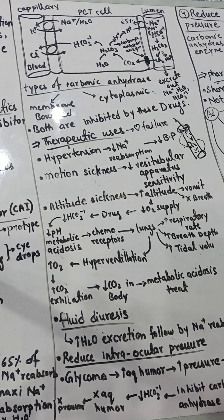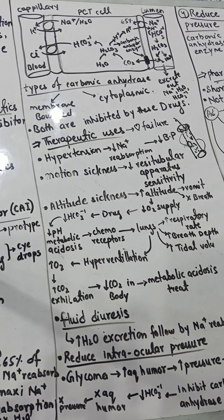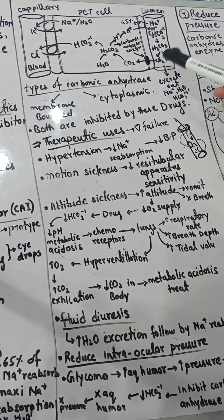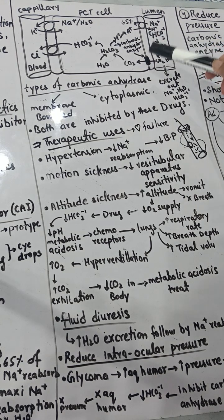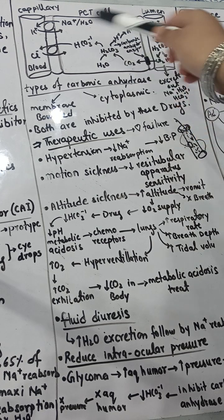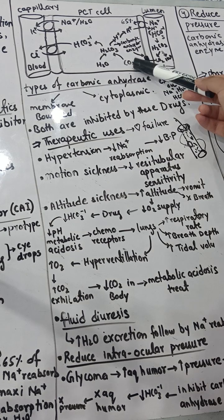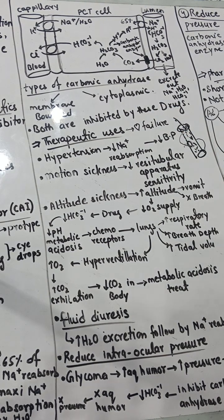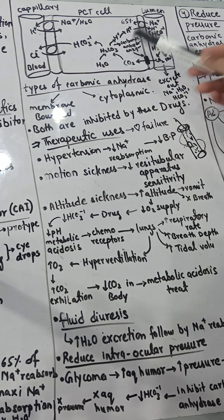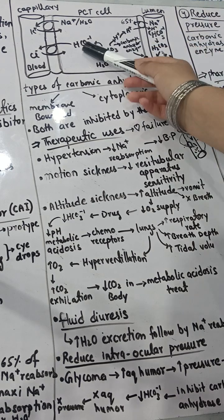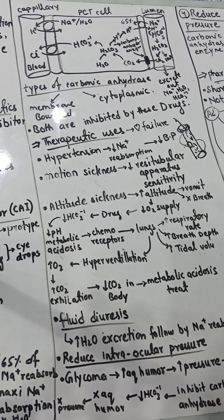This hydrogen in the lumen combines with bicarbonate to form carbonic acid (H₂CO₃). Carbonic acid is unstable and dissociates into carbon dioxide and water. The carbon dioxide diffuses through the membrane with the help of carbonic anhydrase enzyme into the cell. Inside the cell, water and carbon dioxide recombine to form carbonic acid again, which is then dissociated by carbonic anhydrase into hydrogen and bicarbonate.